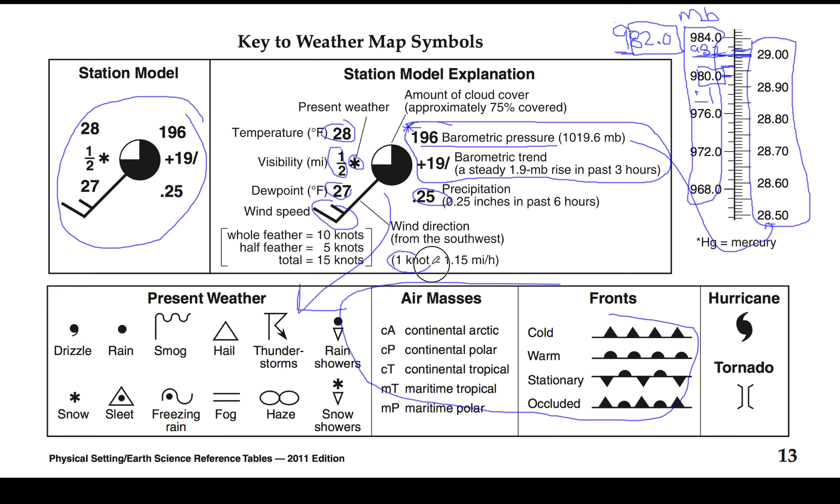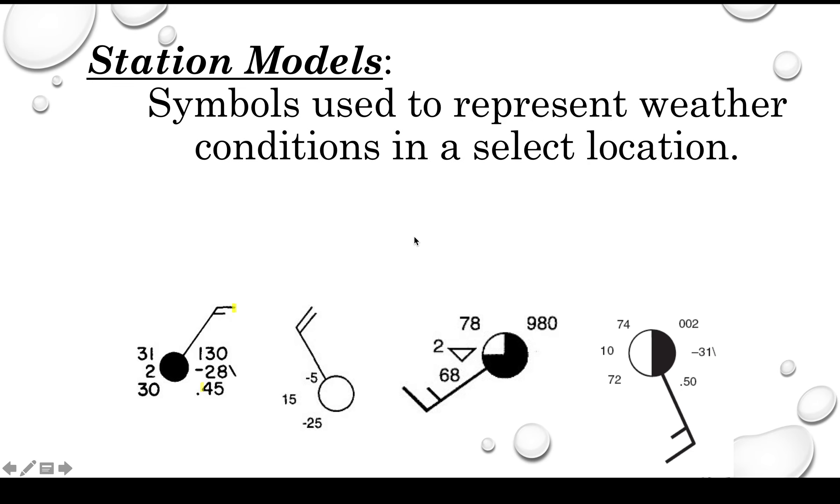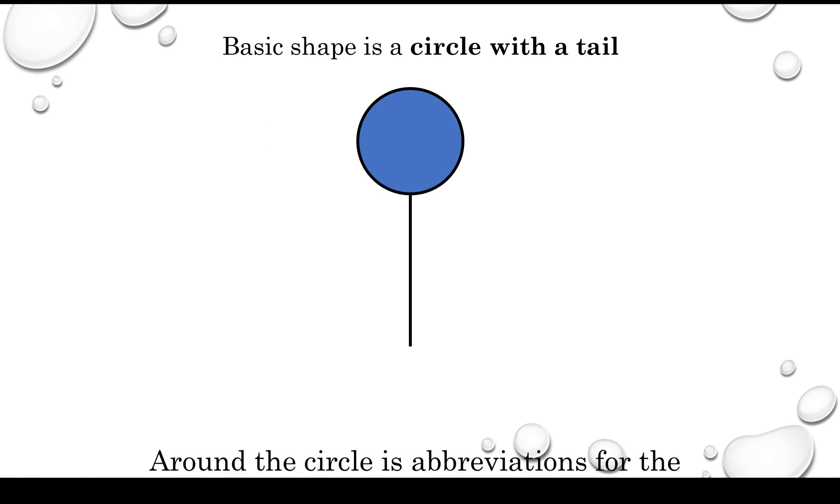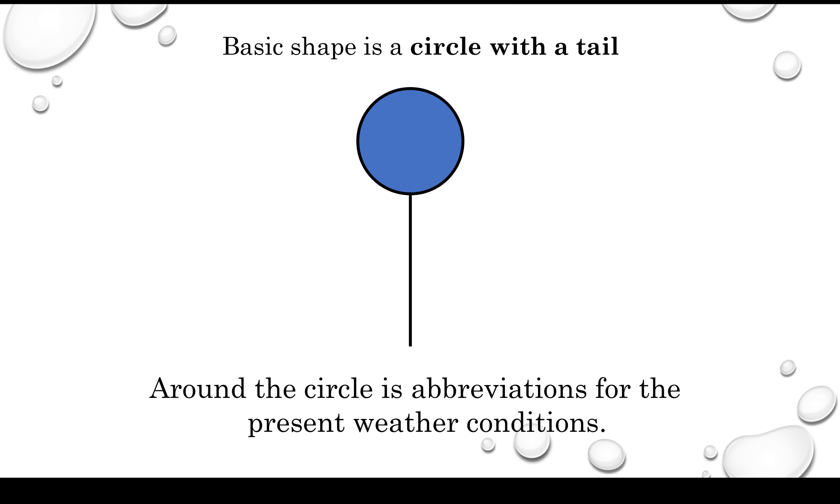Remember last week we talked about air masses and fronts, so we're going to kind of put that on the back burner for now. Just remember that winds are in knots and the direction that the tail is pointing is the direction that the wind is coming from. Remember that winds are labeled based on the direction they're coming from: southwest wind coming from the southwest, blowing towards the northeast.